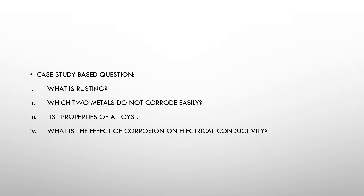The next question shows an arrangement with three test tubes A, B, and C. Test tube A contains iron nails submerged in water with air present. Test tube B contains iron nails kept in boiled distilled water with a layer of oil on top to seal it. Test tube C contains dry air, iron nails, and anhydrous calcium chloride at the bottom.